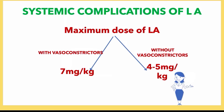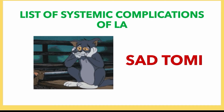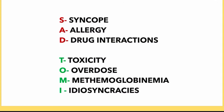You can easily memorise the list of systemic complications of local anesthesia with a mnemonic — remember SAD TOMMY. S is for syncope (a separate video has been done on syncope), A is for allergy (which we'll be dealing with in detail), D is for drug interactions, T is for toxicity, O is for overdose, M is for methemoglobinemia, and I is for idiosyncrasies.